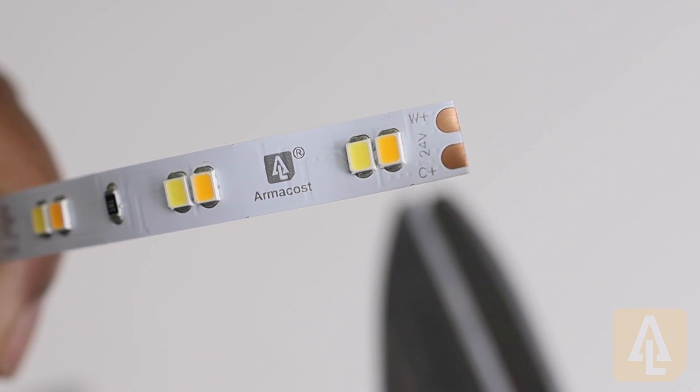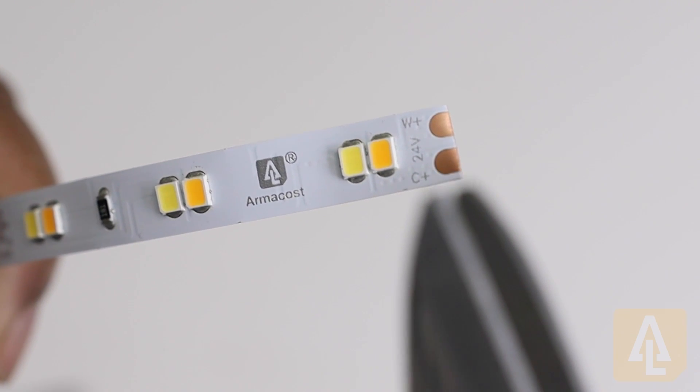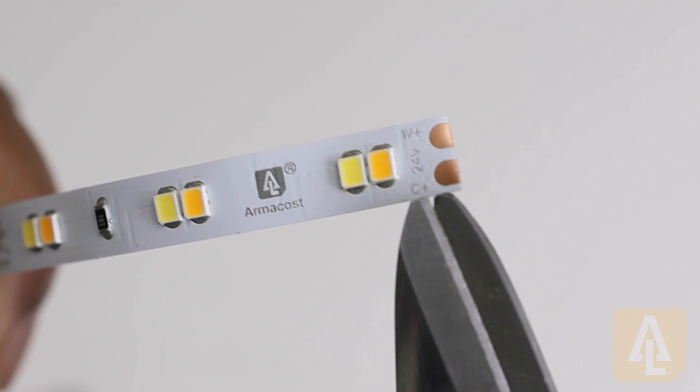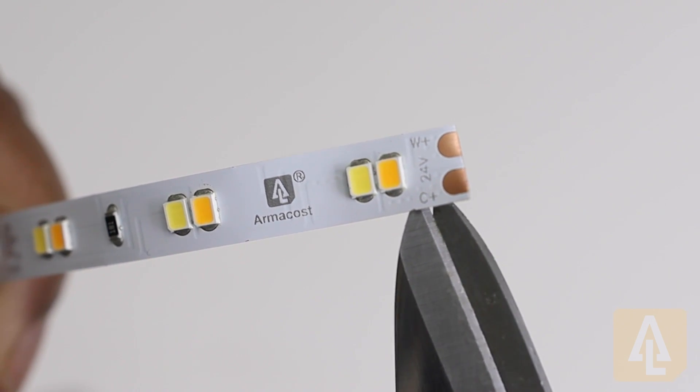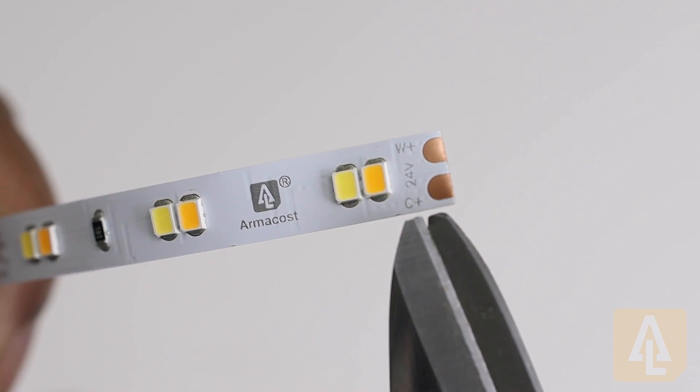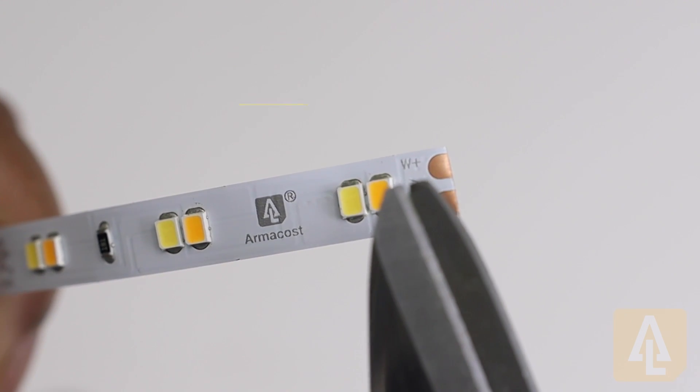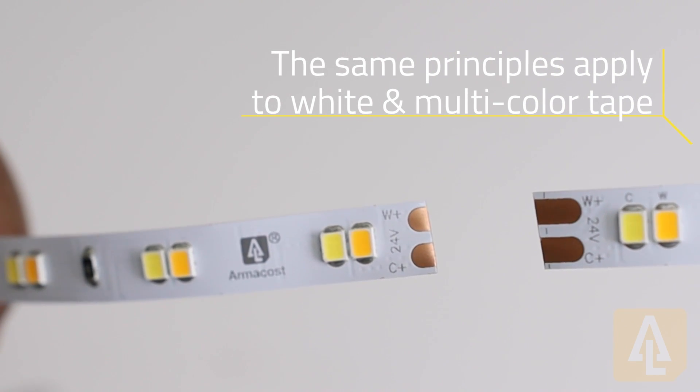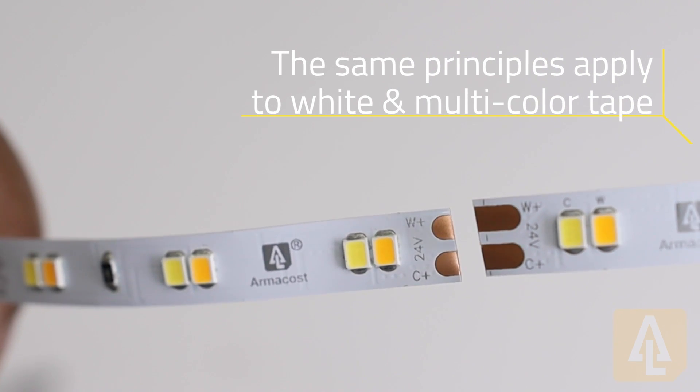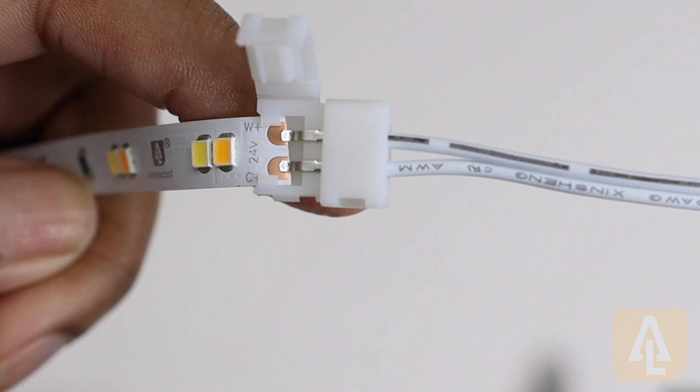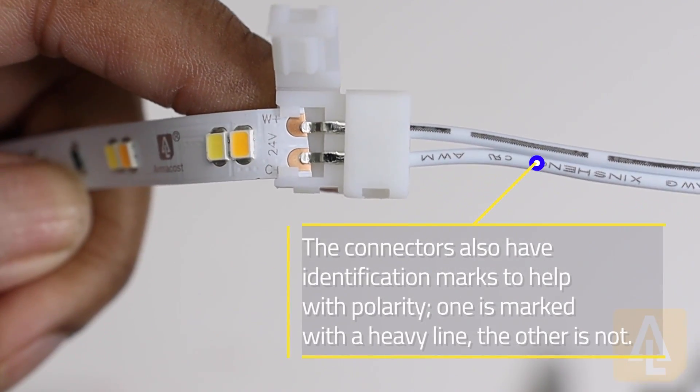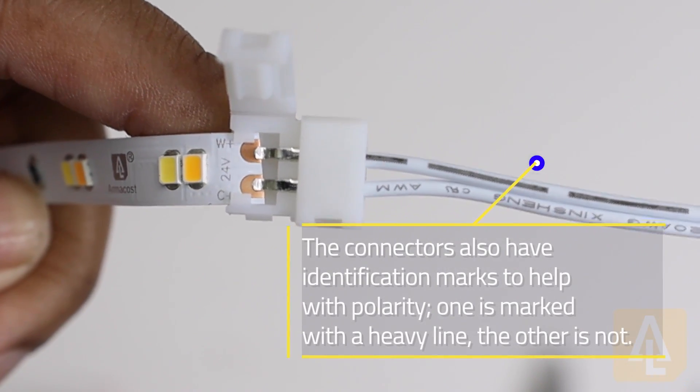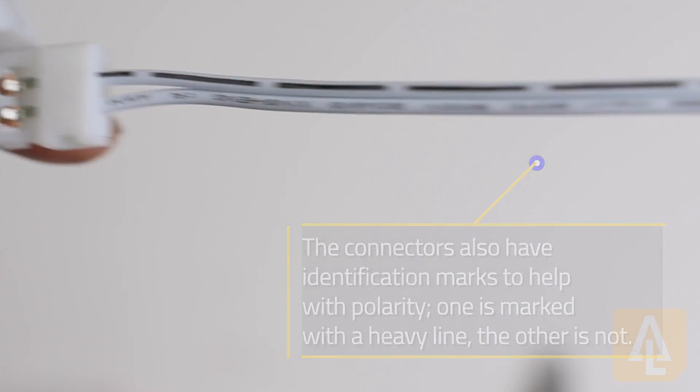If you look at the markings over the copper cut points, you can see a W+ and also a C+. Anytime we cut our tape, we want to make sure that we keep these consistent because the polarity is in the tape and not in the wire. We're going to go ahead and use that connector. On this side I have my W+ on top, and then on the other side I have my C+ on top, so I have reversed the polarity.